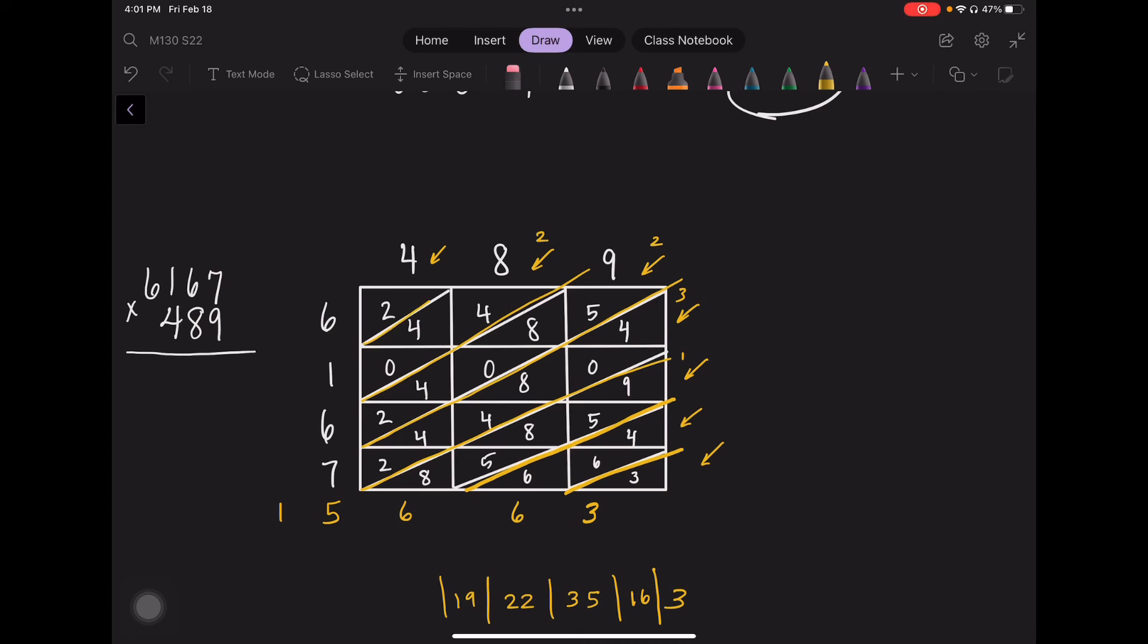Then I have 0 plus 4 plus 4 plus that 2. That gives me 10. Carry the 0. Drop the 0 and carry the 1. And then I have 2 plus 1 which is 3.